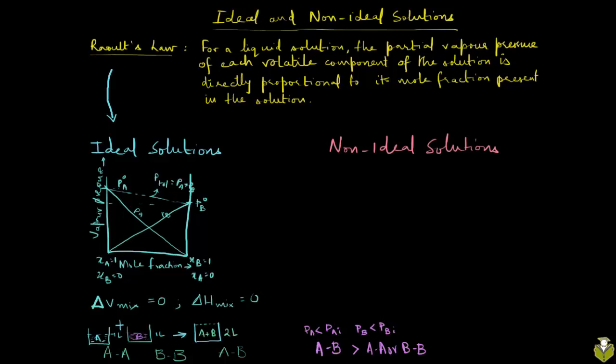The other behavior, the second type of behavior, is where your A-B interactions - the intermolecular forces between the two liquids - are actually weaker than the interactions within each liquid, AA or BB here.